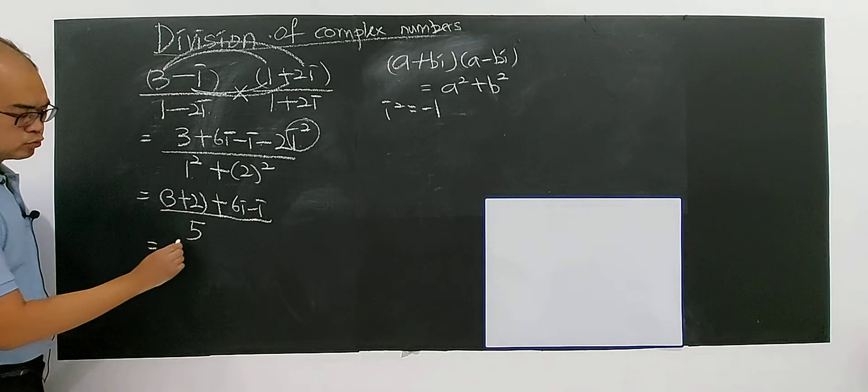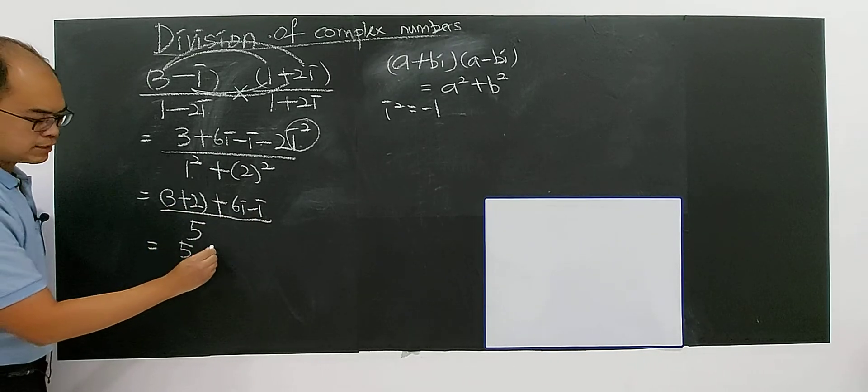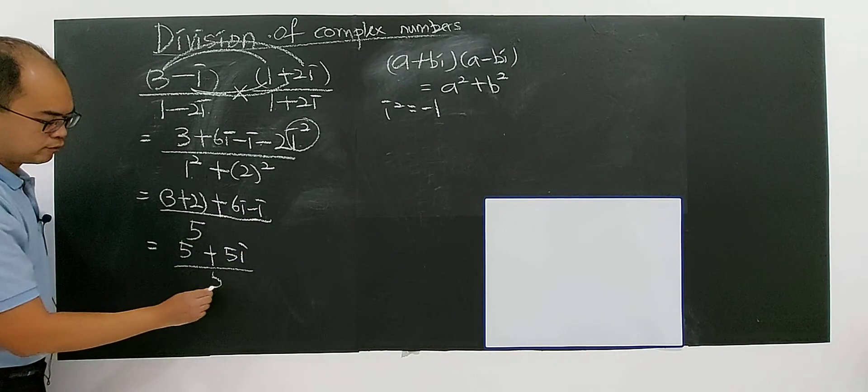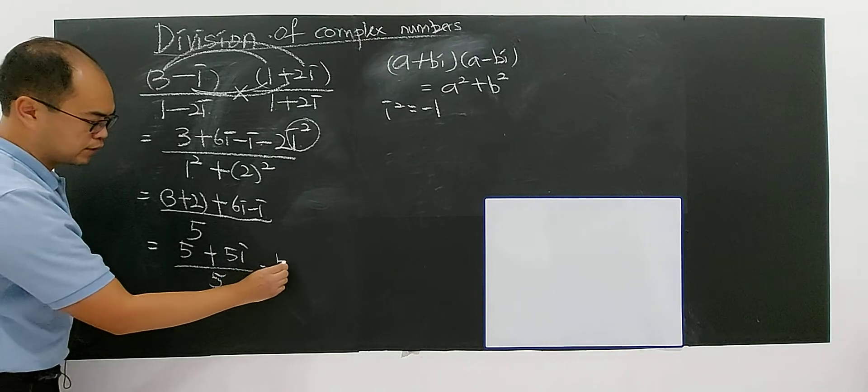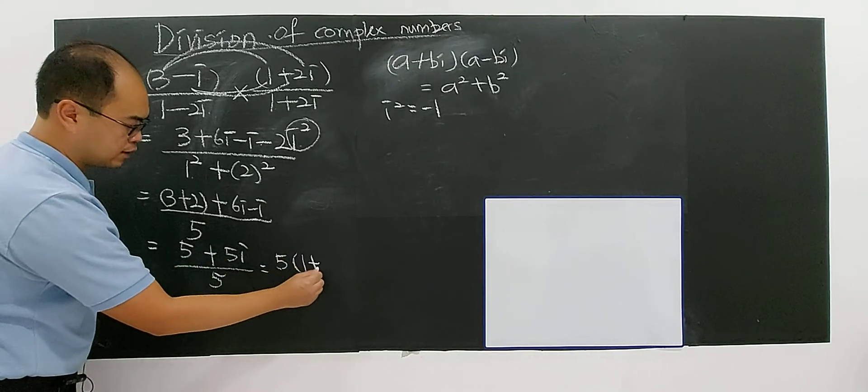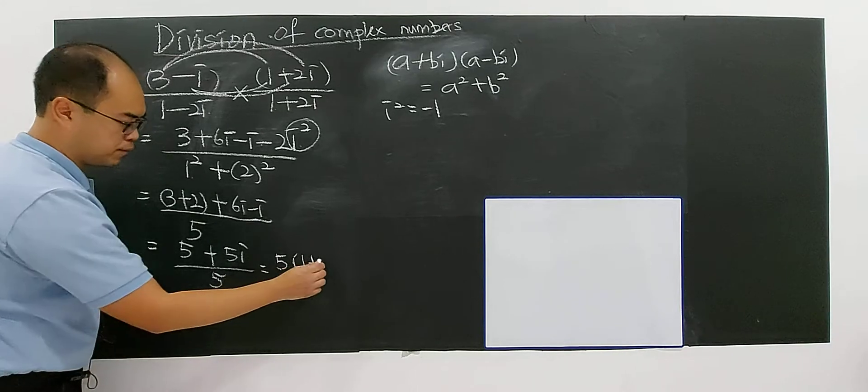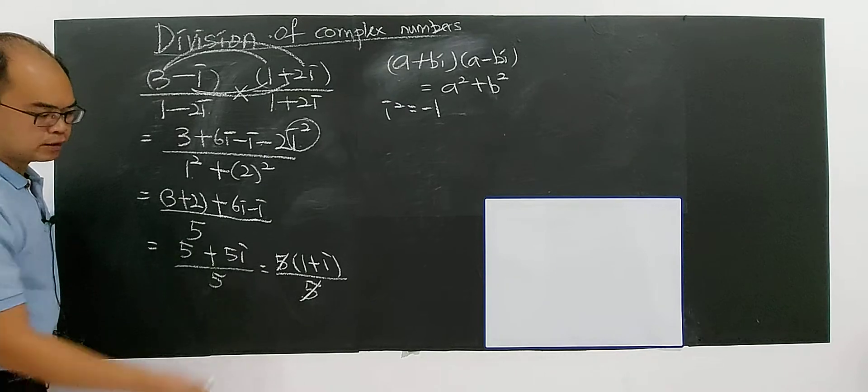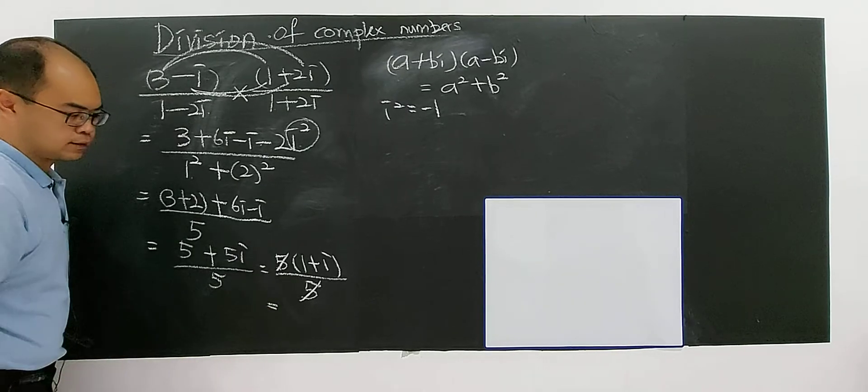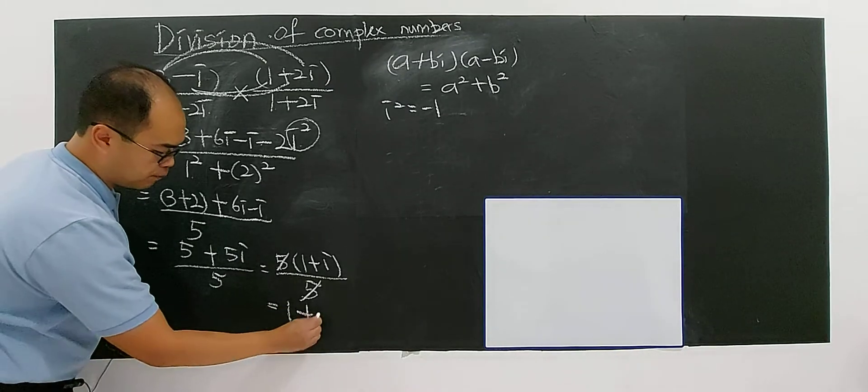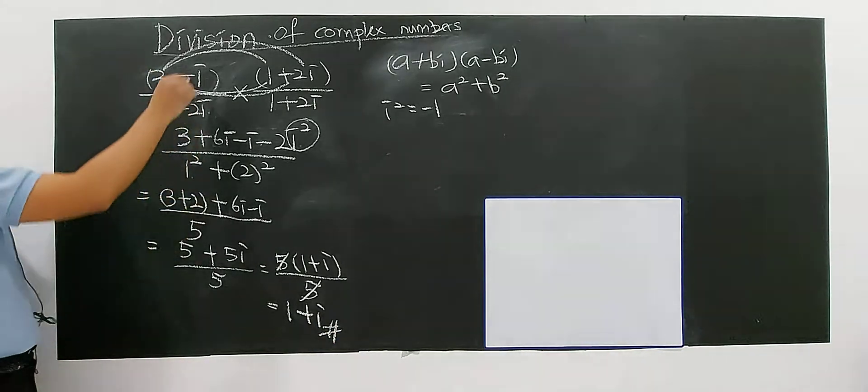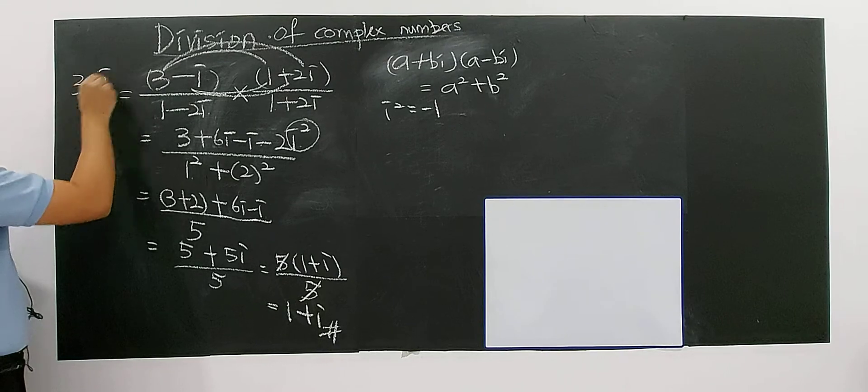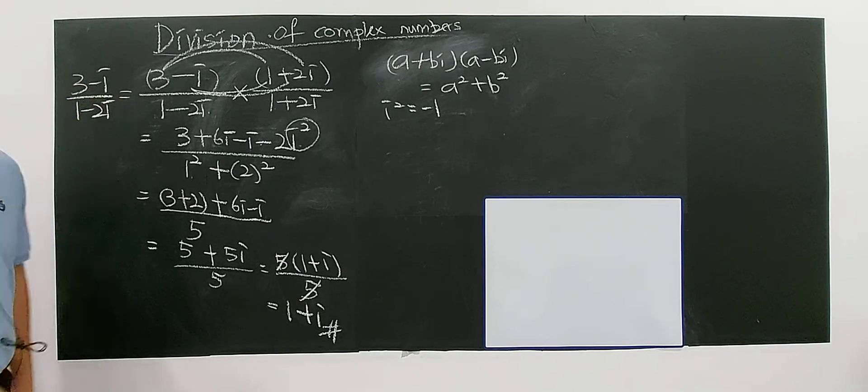So you have 5. Three plus two, you have 5, plus with 6i minus i, then you have 5i over 5. You can bring out the 5, factorize the 5, and you have 1 plus i divided by 5. Then you can cancel out the common factor. So finally you have 1 plus i after you simplify.